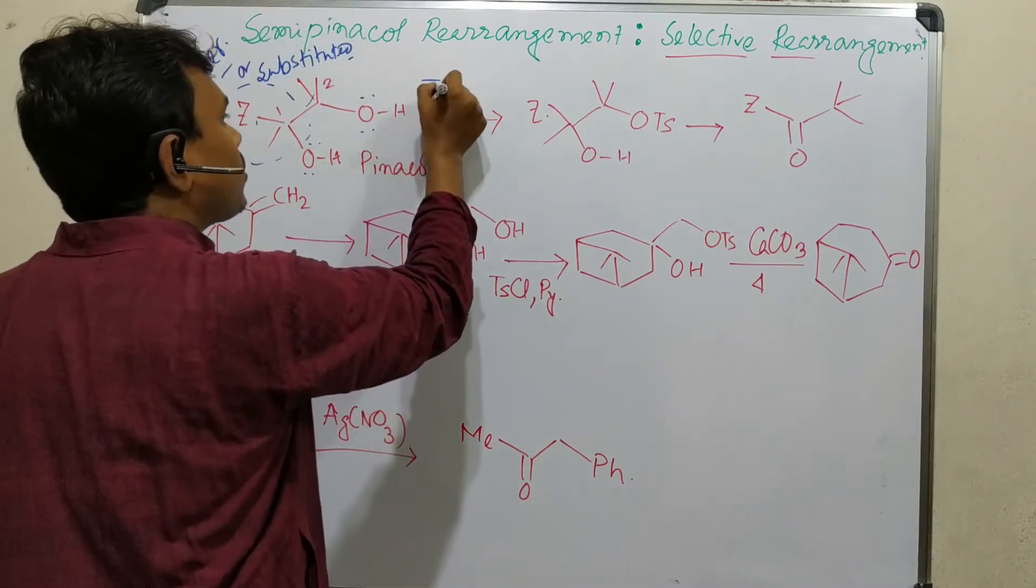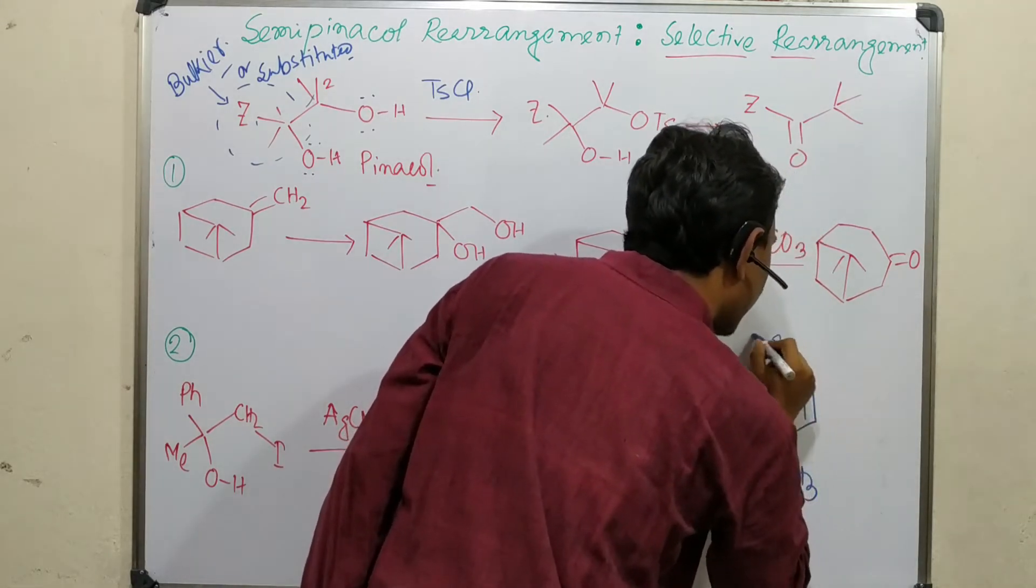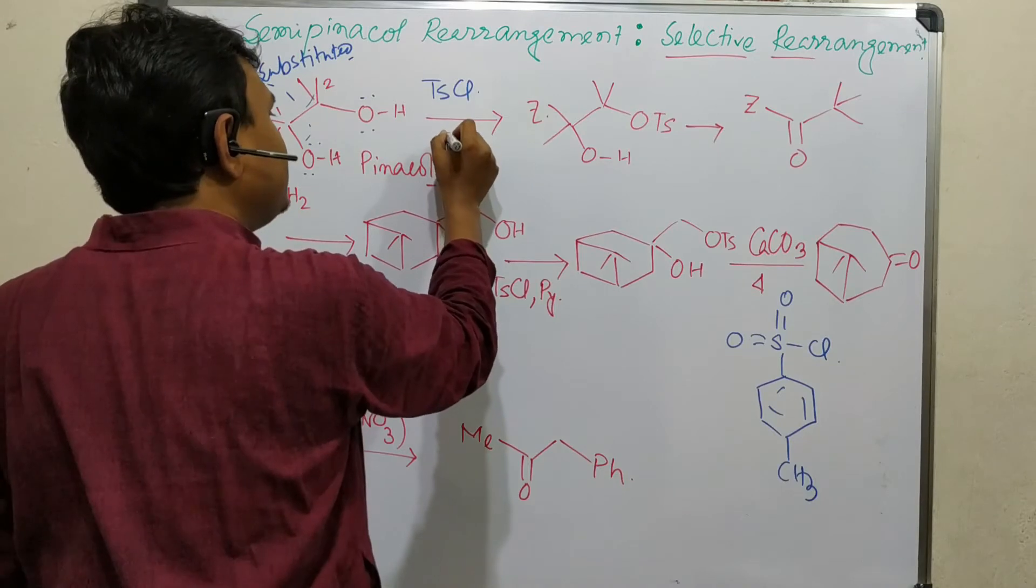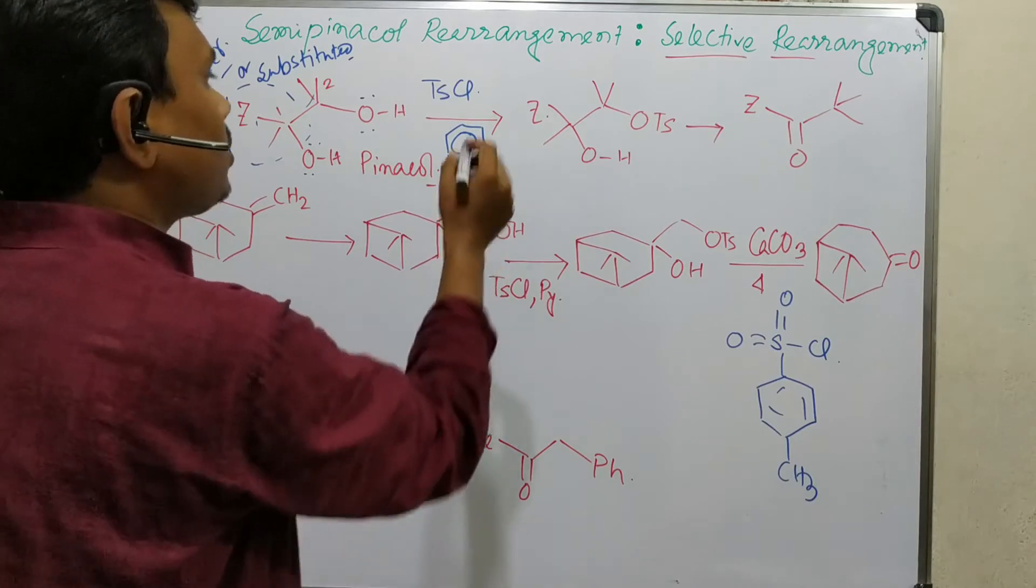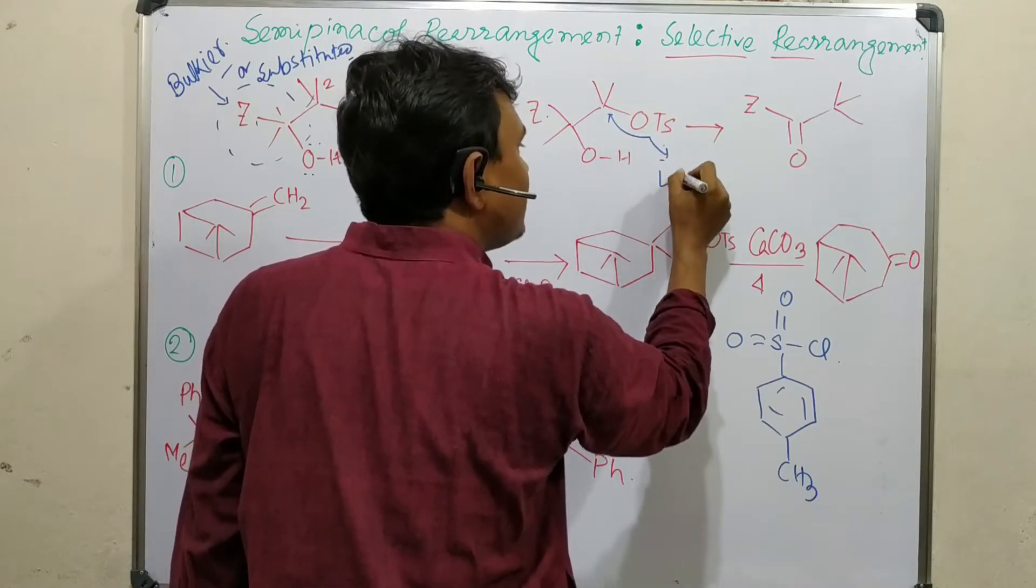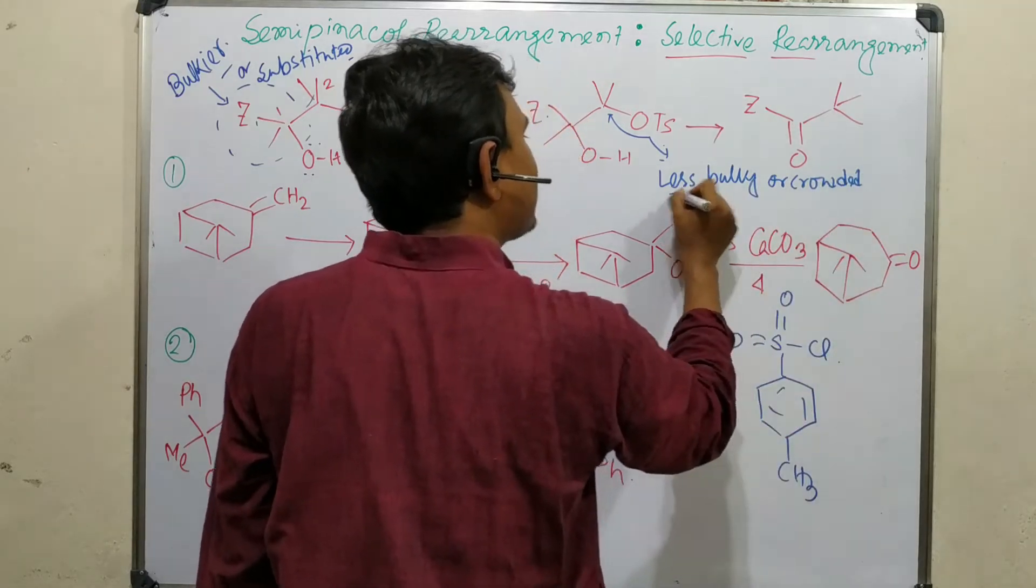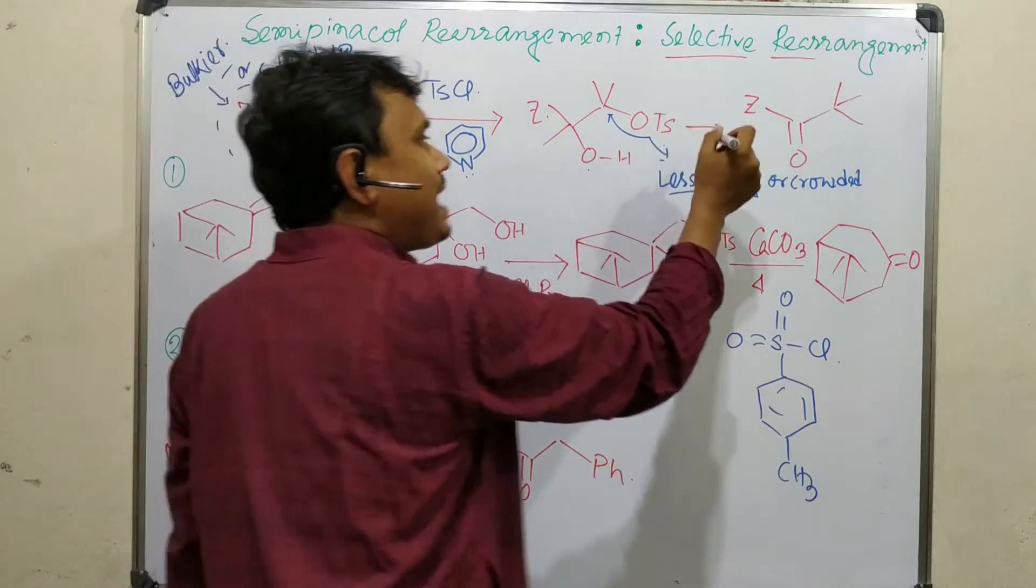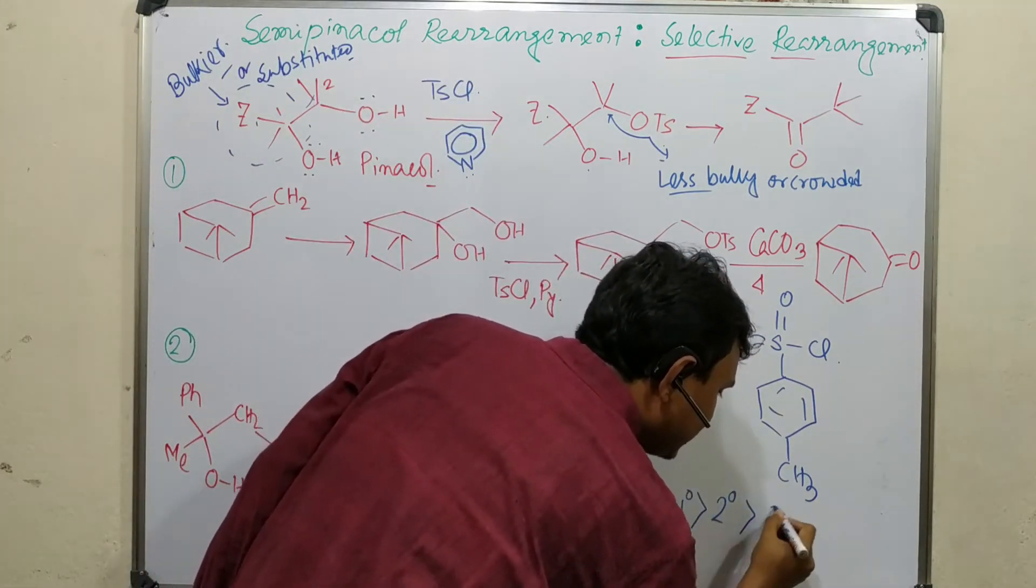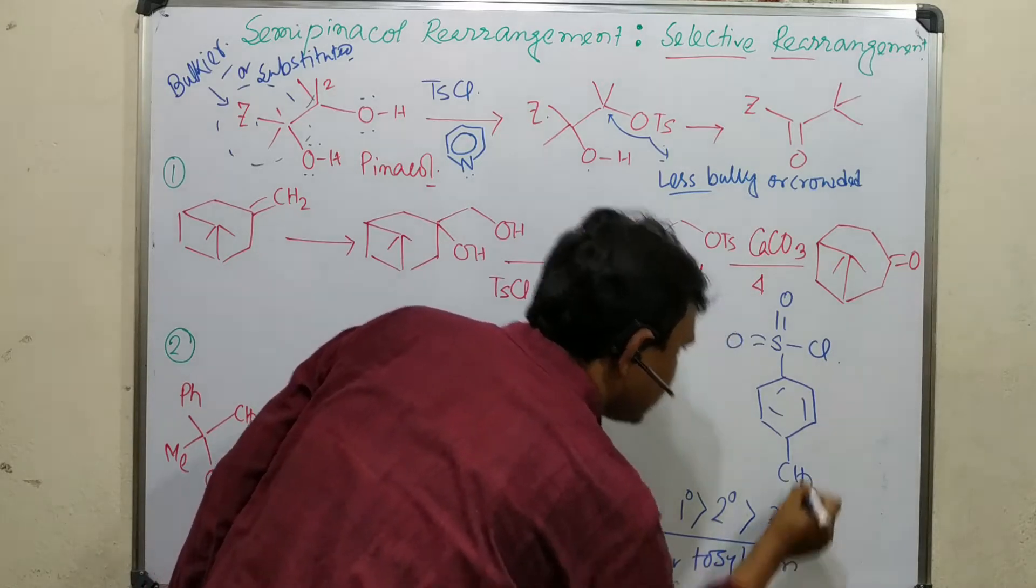Here if we use tosyl chloride - tosyl chloride is para-toluene benzene sulfonyl chloride, it's an acid chloride of sulfonic acid - in presence of pyridine, this pyridine acts as a base. So selective tosylation happens on this center because this is a less bulky center.